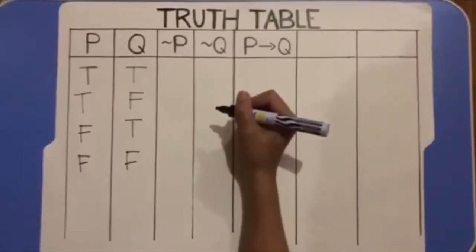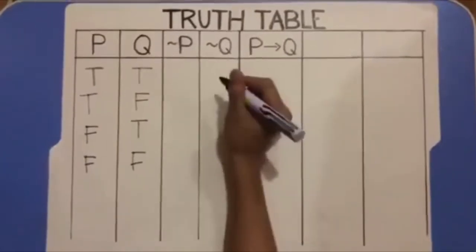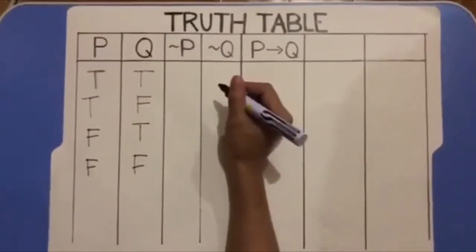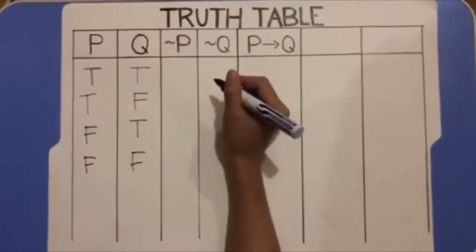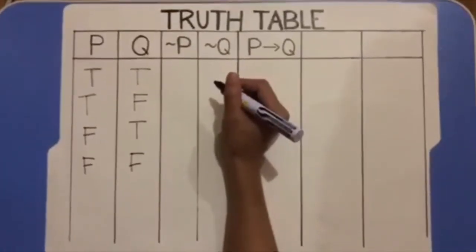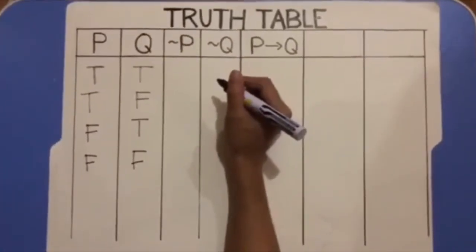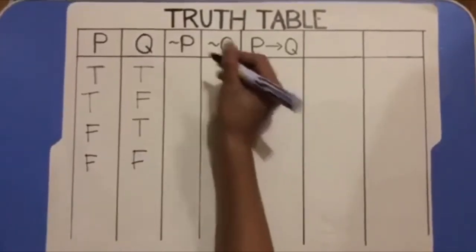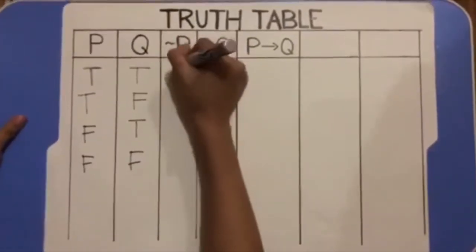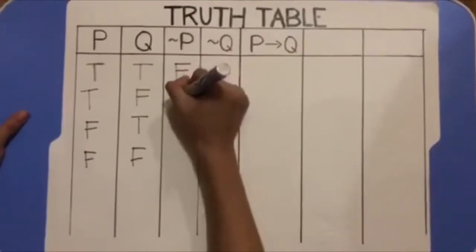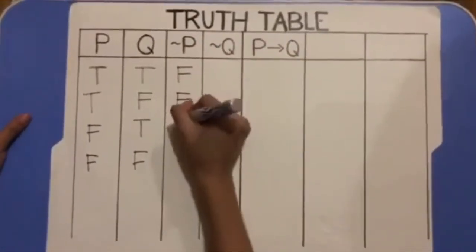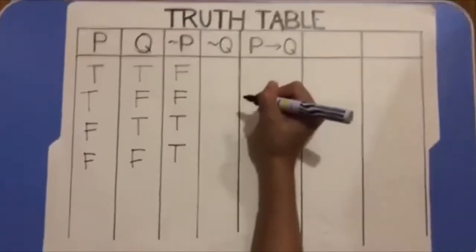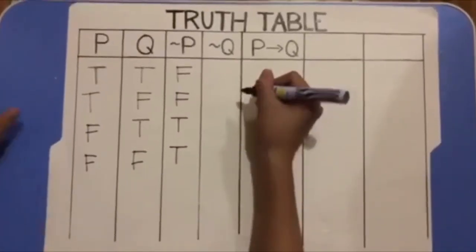In the third column, I list the values of negation P based on the values of P. I use the truth table for negation. When P is true, negation P is false. And when P is false, negation P is true. Same on the fourth column.